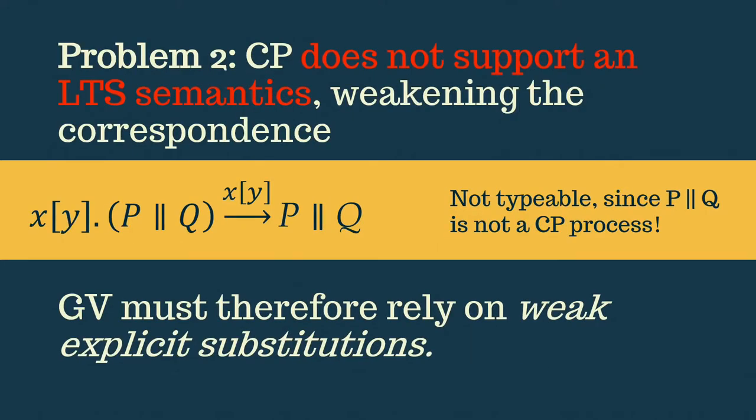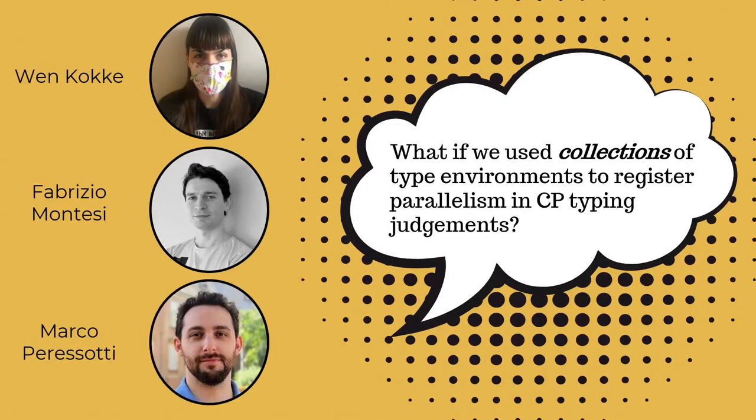There's also a really annoying problem with the correspondence between CP and GV, which stems from the fact that CP doesn't support a label transition semantics and therefore doesn't have a behavioural theory. So as an example, we can't write a transition rule for output since the right-hand side is not a CP process. To get a semantics preservation result, GV therefore needs to rely on weak explicit substitutions in order to show that beta reduction is preserved by the translation. Now, this changes the reduction strategy of GV and clutters the language just to exhibit a correspondence.